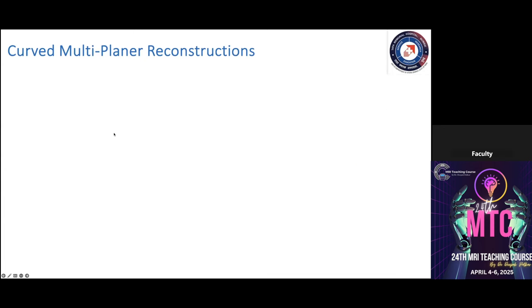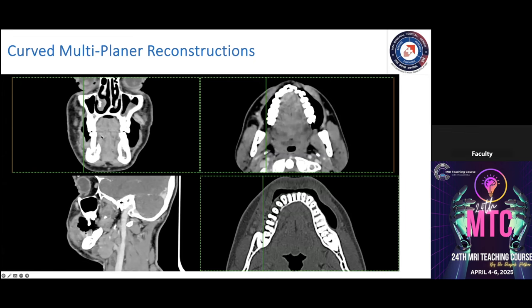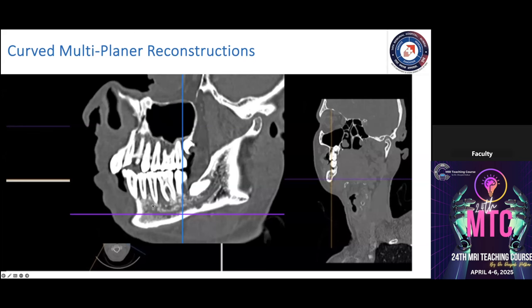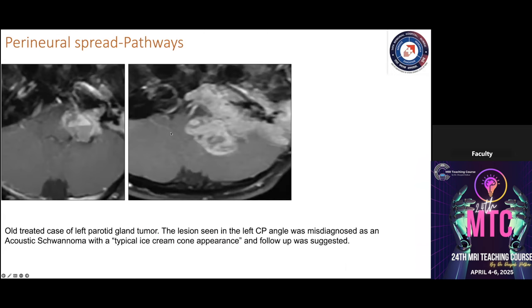We need multi-planar reconstructions, especially curved MPR, because the mandible is not a straight bone. We must orient according to the disease to see erosions best. In soft tissue windows or even bone windows on axial sections, erosion may not be apparent, but once we perform curved MPR oriented to the mandibular segment and zoom in, significant destruction around tooth sockets becomes visible, with teeth appearing to float in destructed bone.